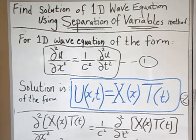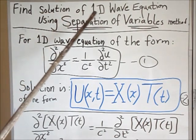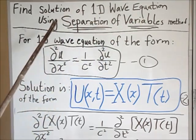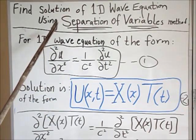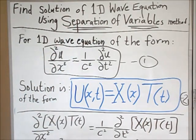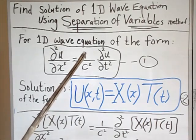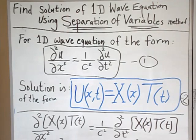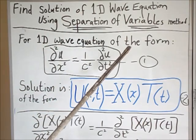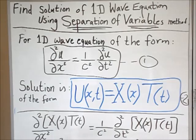Hi folks, this is Math and Physics for You. Today we're going to find the solution of the 1D wave equation using the method of separation of variables. This is part one — today we're going to find the general solution, the formula to use in solving these types of problems. In the next video we'll continue with an example.